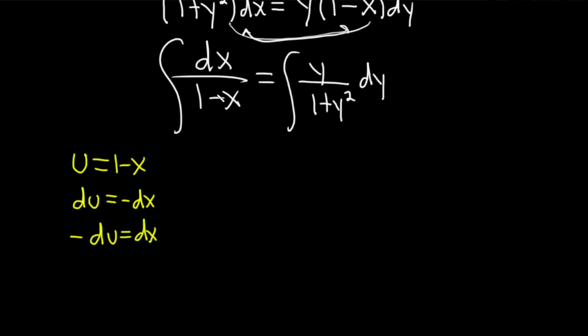So now I'm making the full substitution on the left-hand side here. dx is negative du, so this is negative du, and the bottom piece here is simply u.